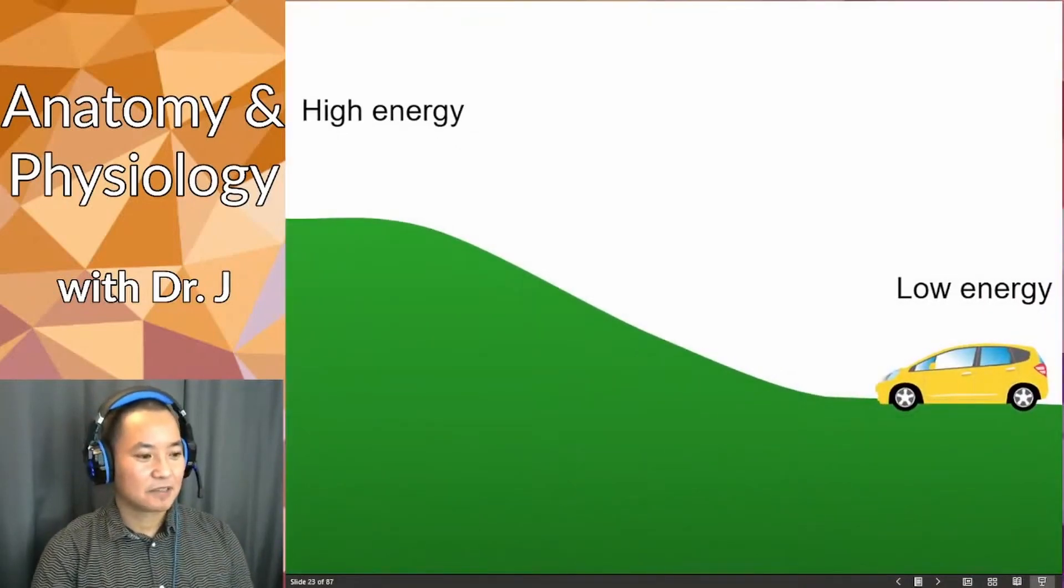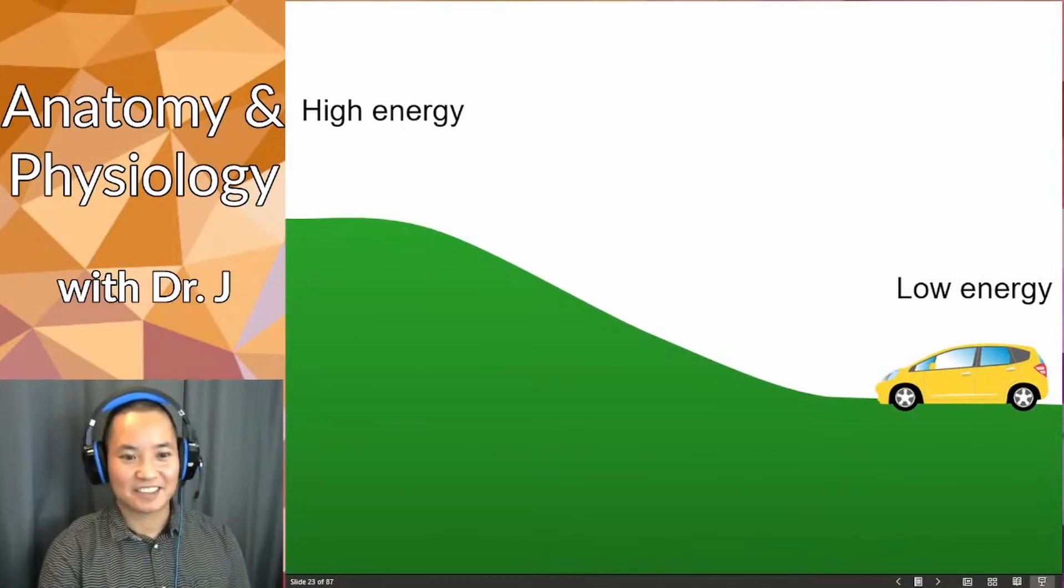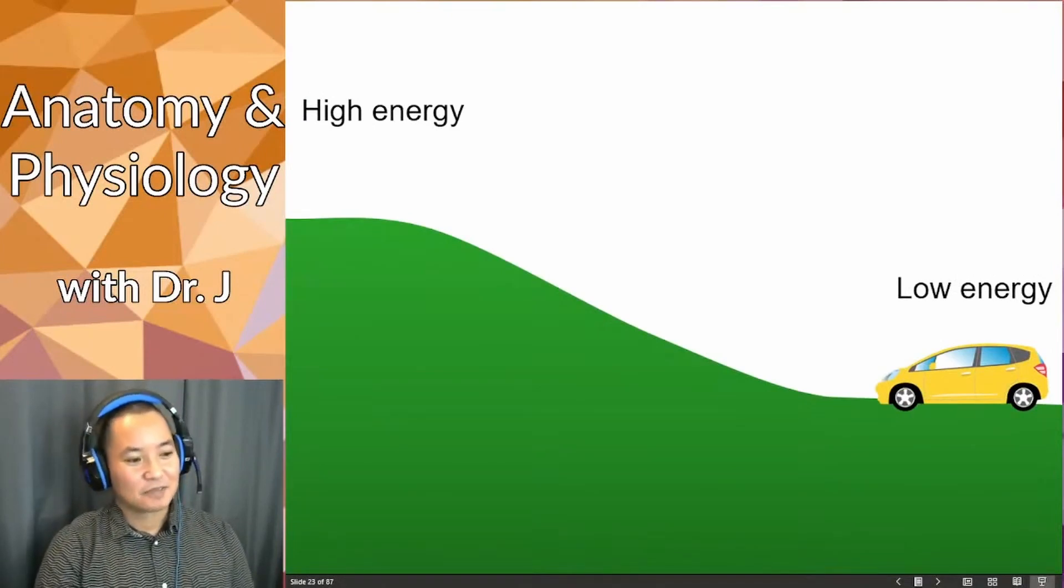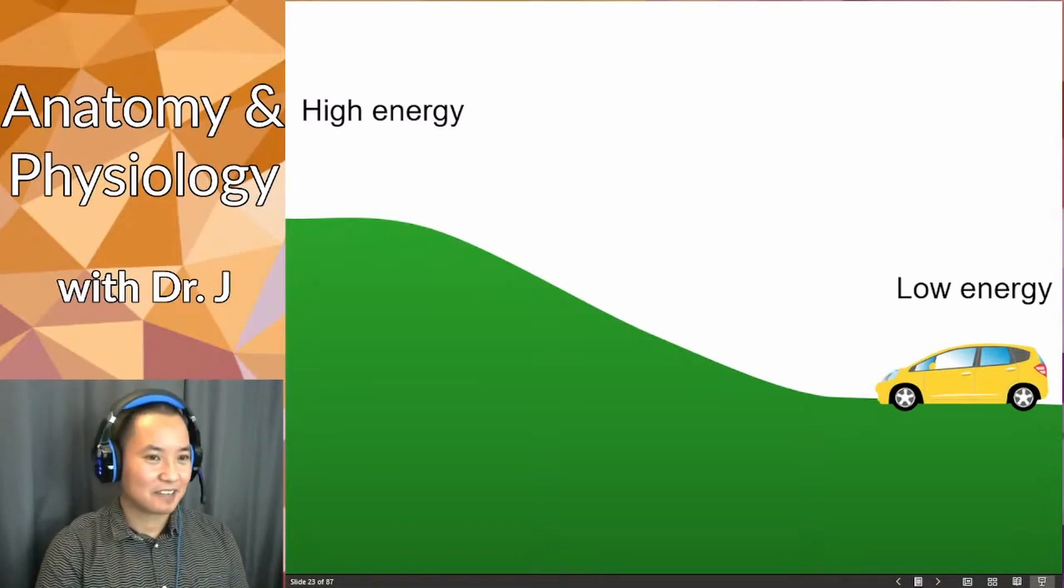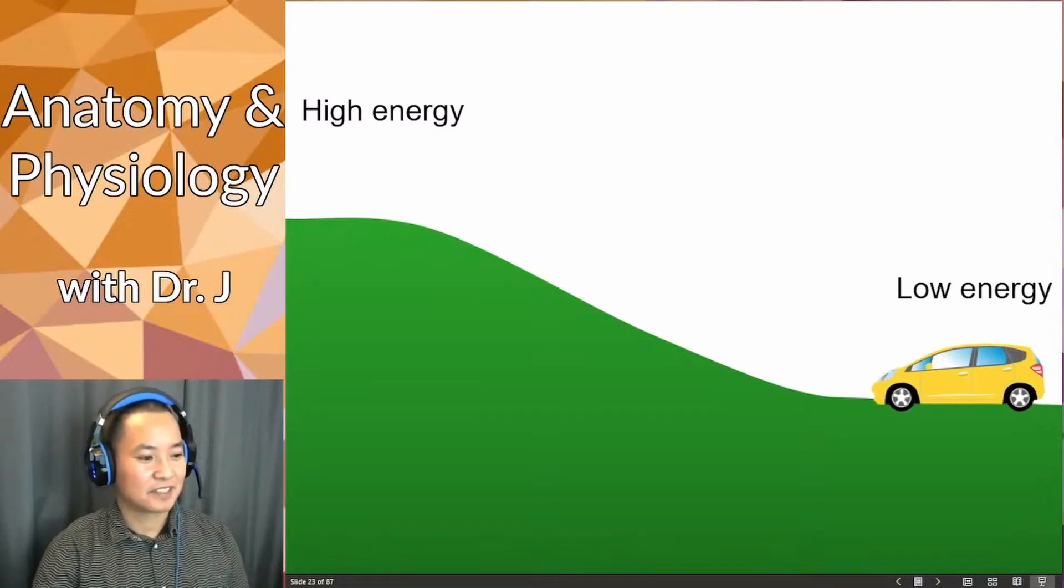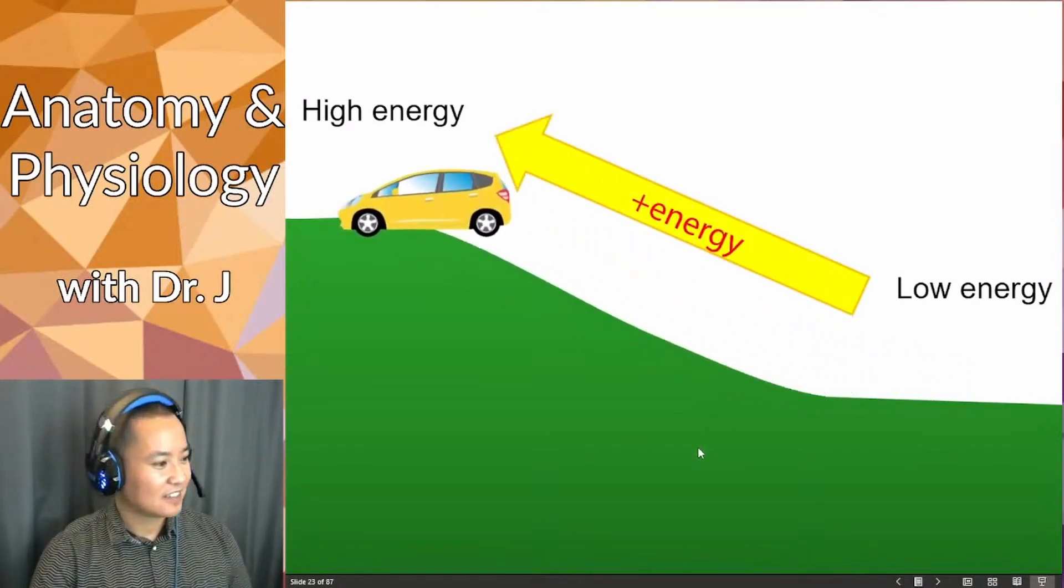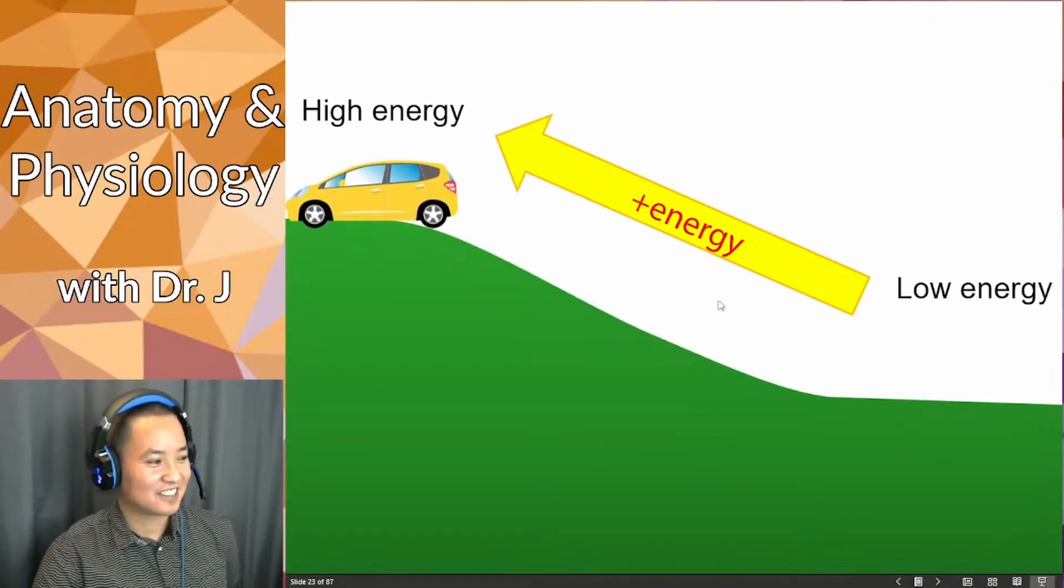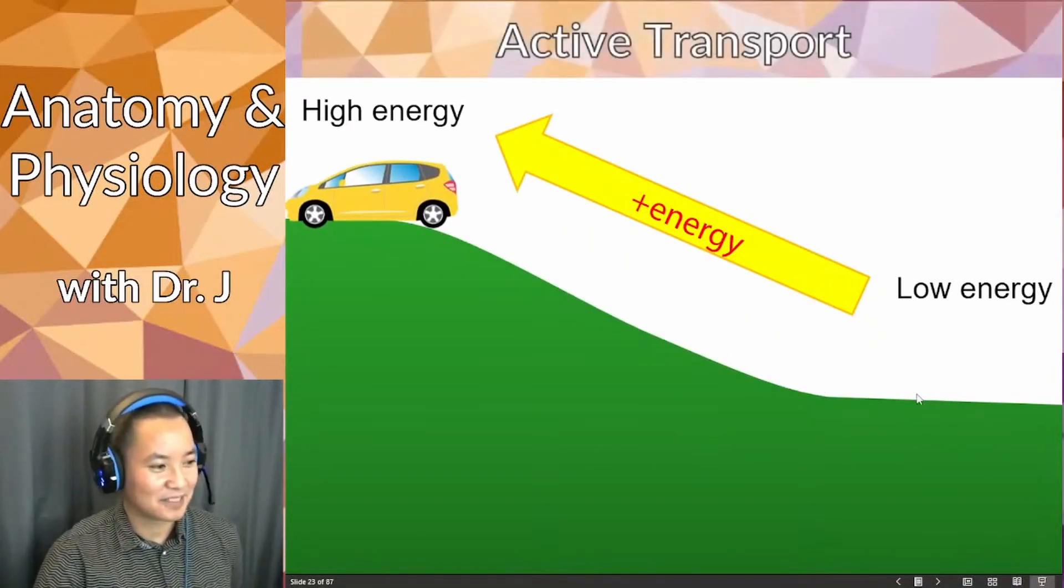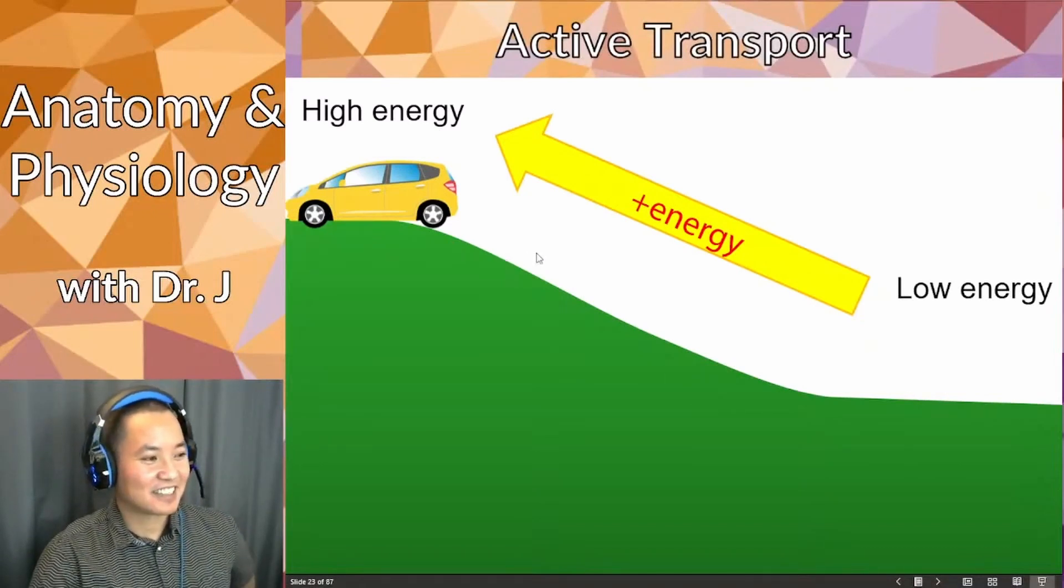So you go from high energy to low energy. Now how about this? From low energy to high energy, if you're going uphill, you have to climb that hill and go all the way up. What do you need to do? You need to apply the gas or accelerator somehow. You have to move the car from low energy to high energy. This is what active transport is.